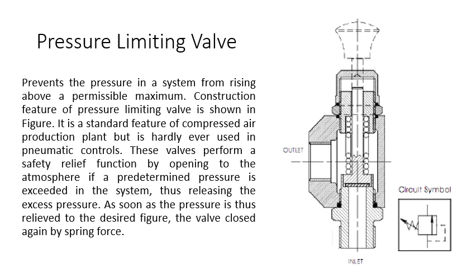The valve releases pressurized air to the atmosphere if the pressure reaches the predetermined level. This releases the excess pressure to the atmosphere; as soon as pressure is thus relieved to the desired figure, the valve is closed again by spring force. If the pressure increases above the set value, it releases to the atmosphere, and when it reaches the required set pressure, it automatically closes the opening. For this reason, it is called a pressure limiting valve — it will safeguard the pneumatic system.